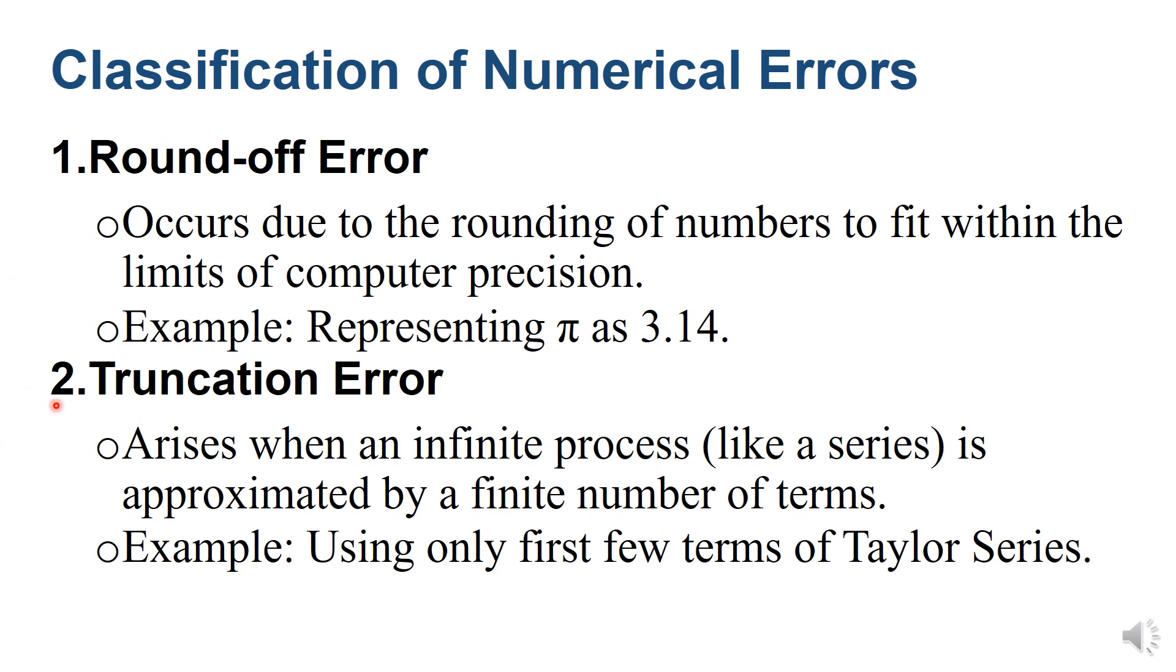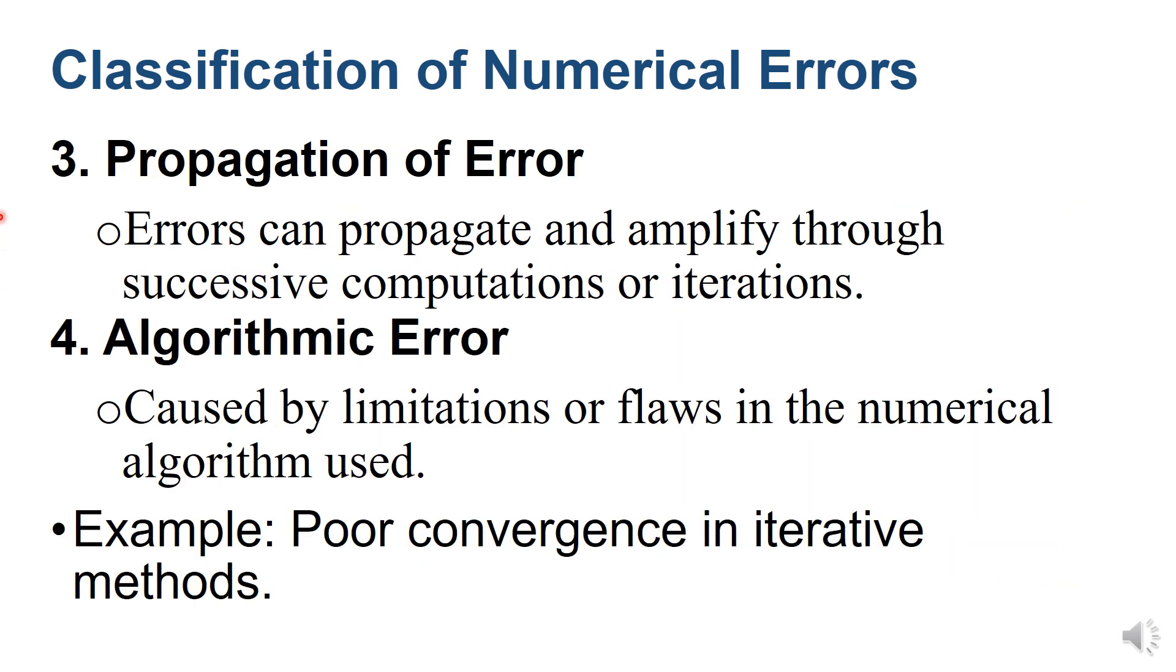Second point, Truncation Error arises when an infinite process, like a series, is approximated by a finite number of terms. Example, Using only first few terms of Taylor series.